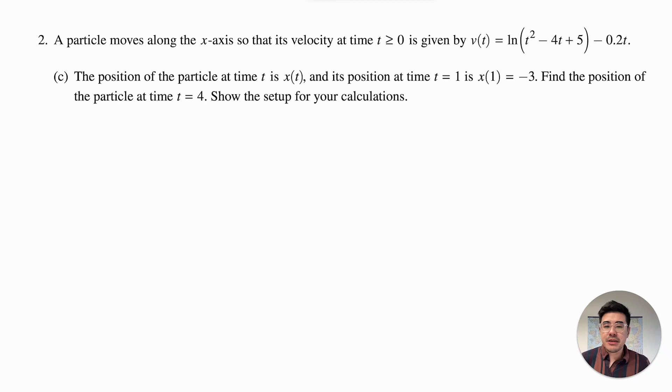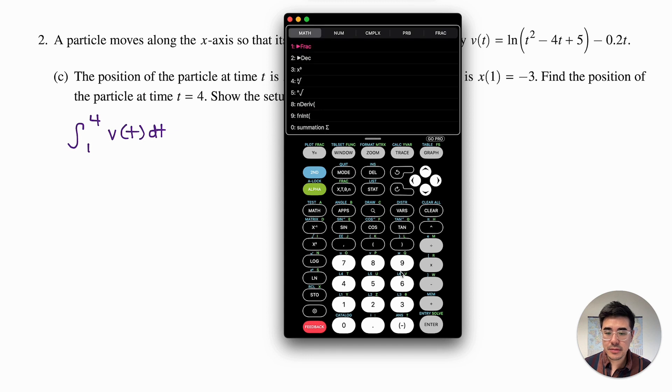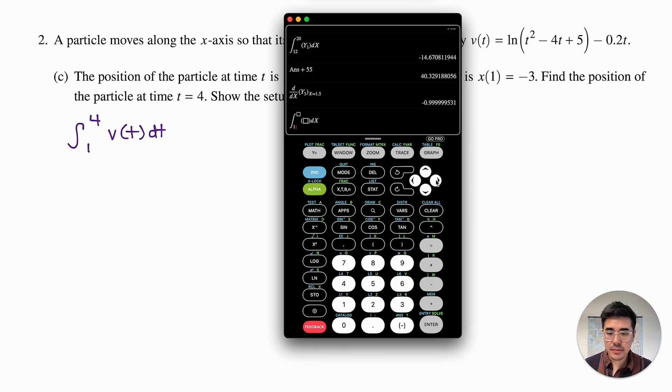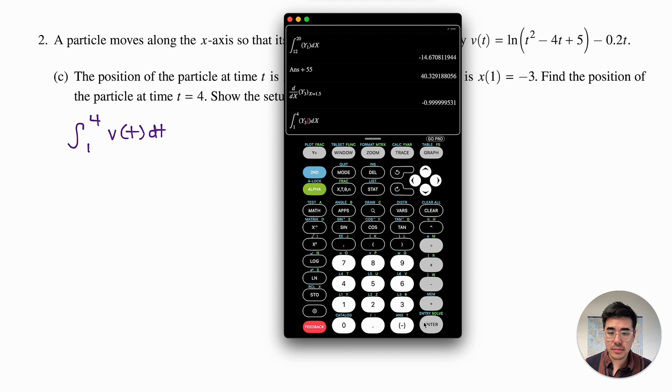Part C gives you the position of the particle at time t equals 1 and asks you to find the position of the particle at time t equals 4 and show the setup for your calculation. Well, they gave us our starting point and our ending point. So what we want to do is we want to integrate from 1 to 4 of the velocity function. So then when I plug that into my calculator, I get 0.197.